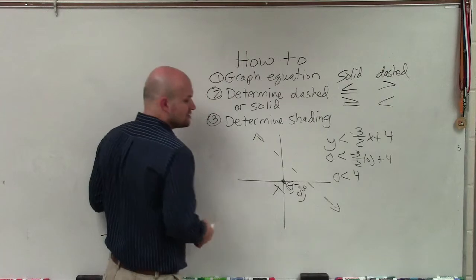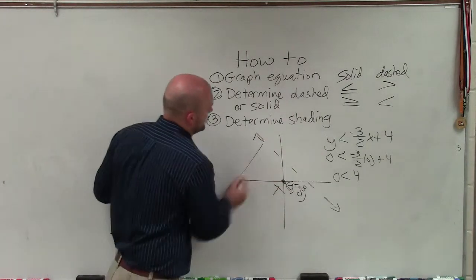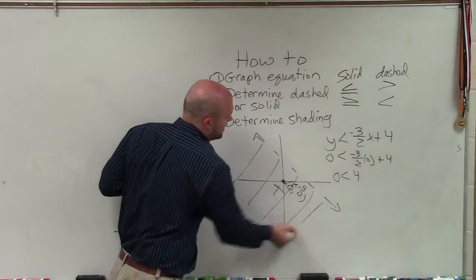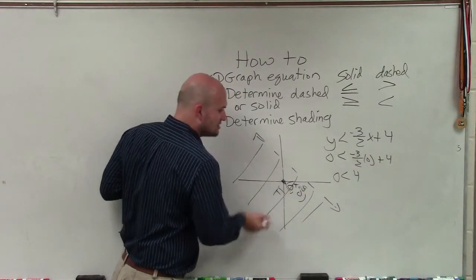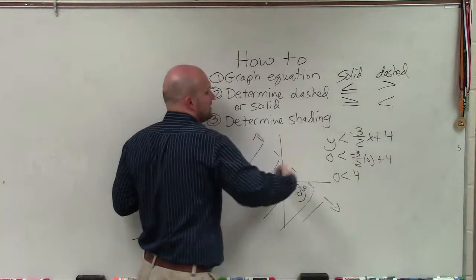Obviously, that is true. So since one point below the line is true, that means all the points below the line are true. So we're going to shade that way. If that point was false, then we would know that all of these points are false, and we'd have to shade above.